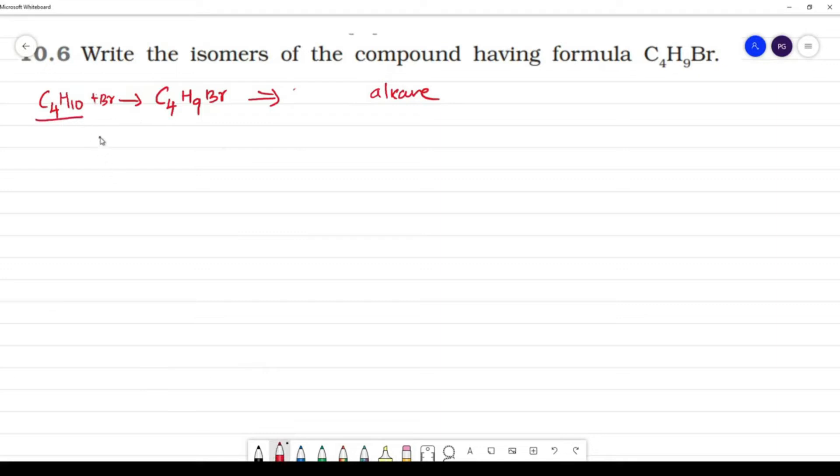Now C4H10, how many isomers are there? So isomers of C4H10. You can see that first, 4 carbon isomer. What do you do? 3 carbon isomer, one isomer. So two types of isomers.